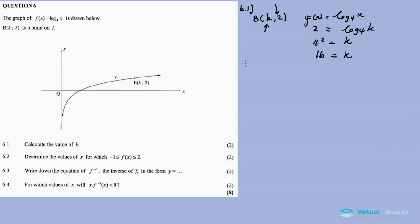So 4 squared is 16. k is equal to 16. So the value for k is equal to 16.